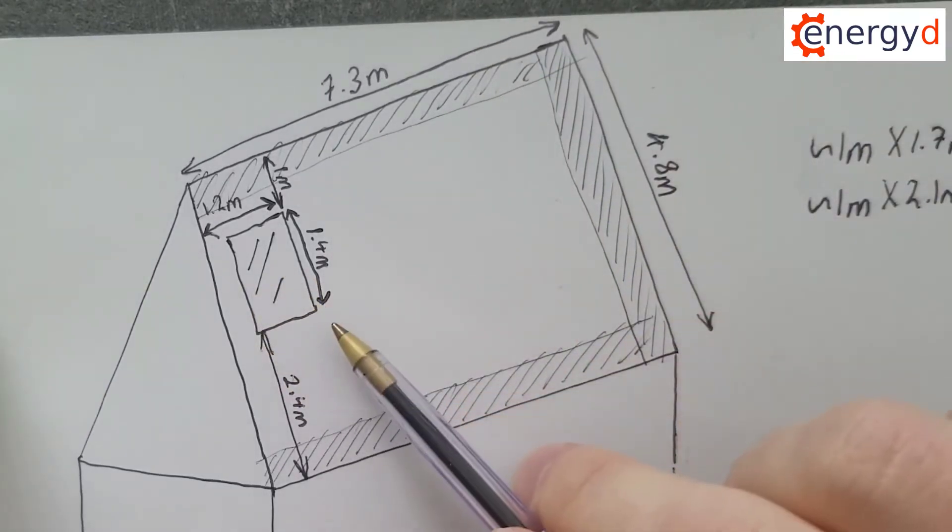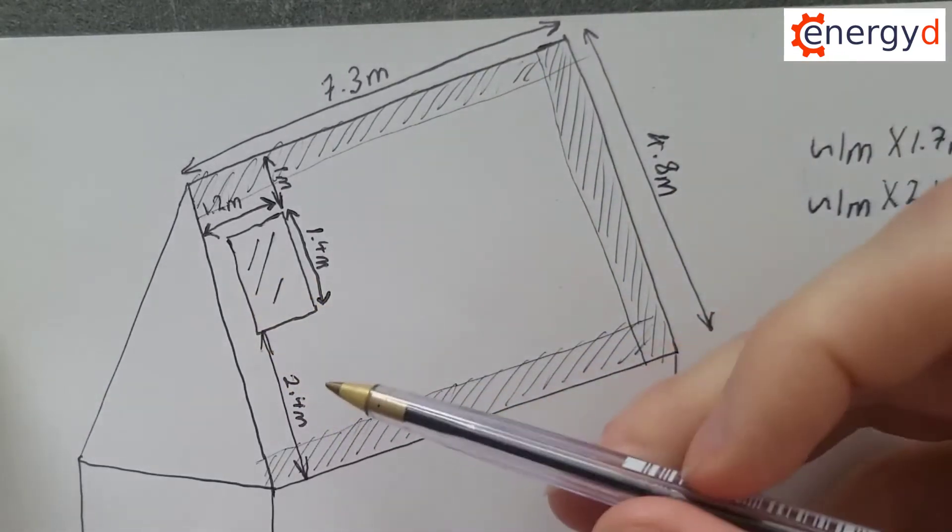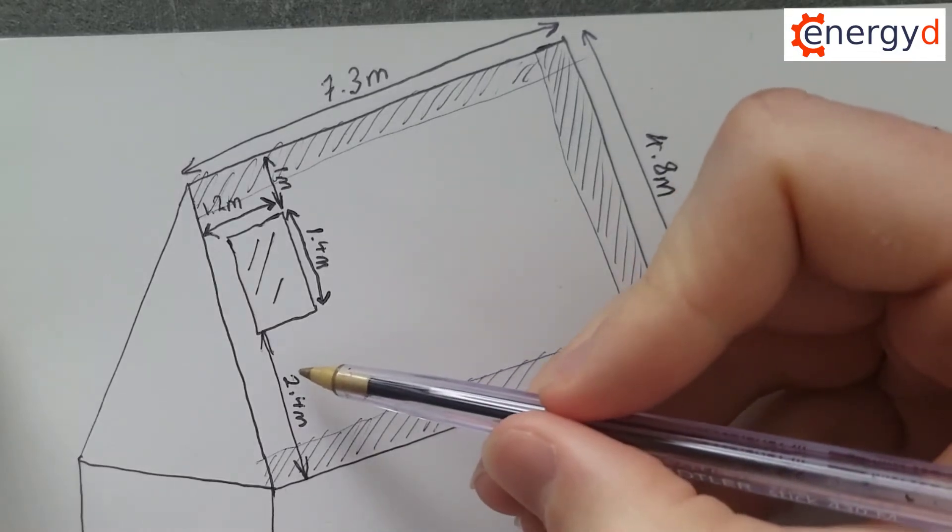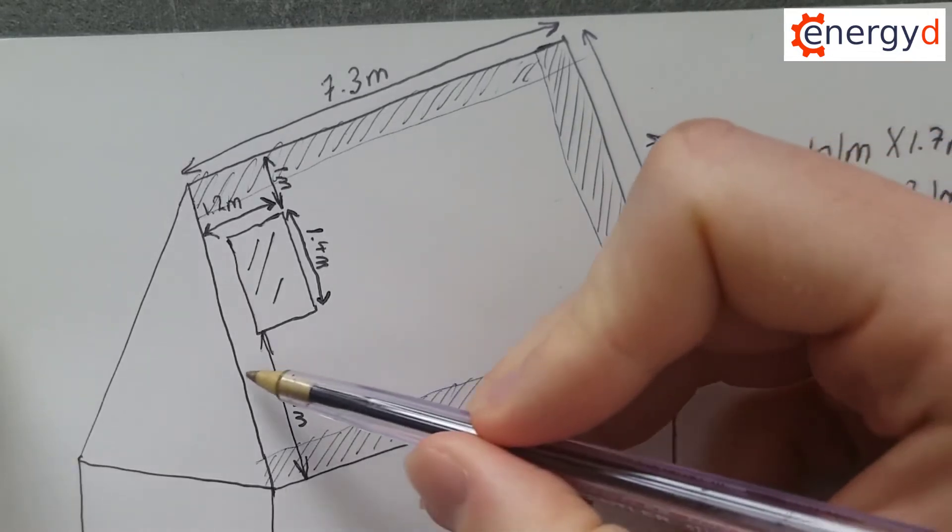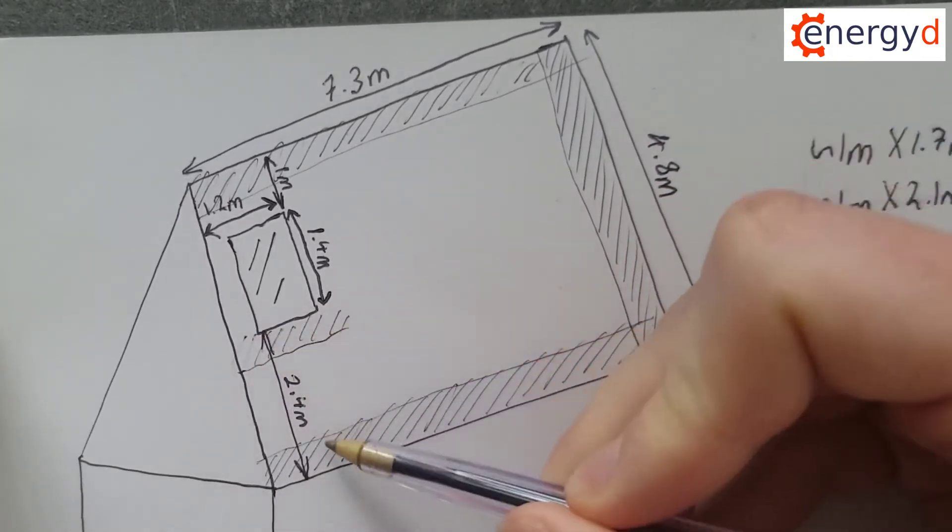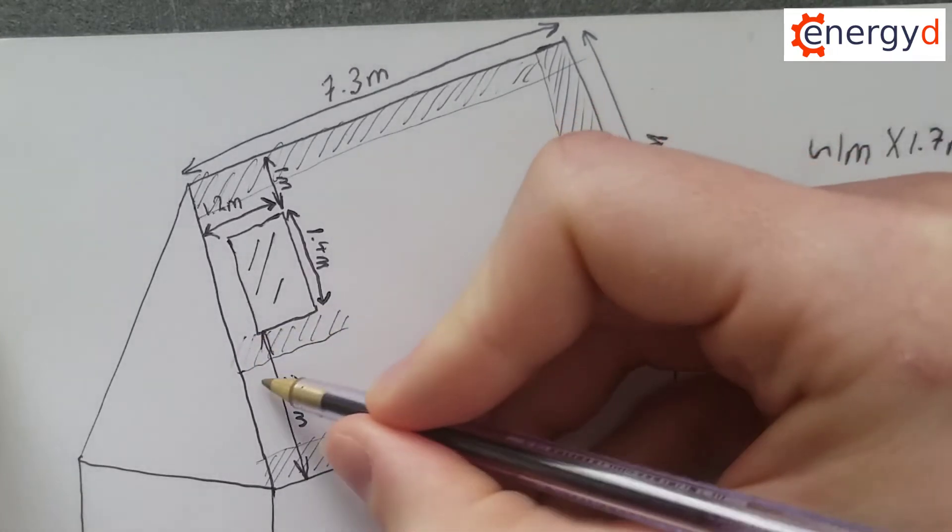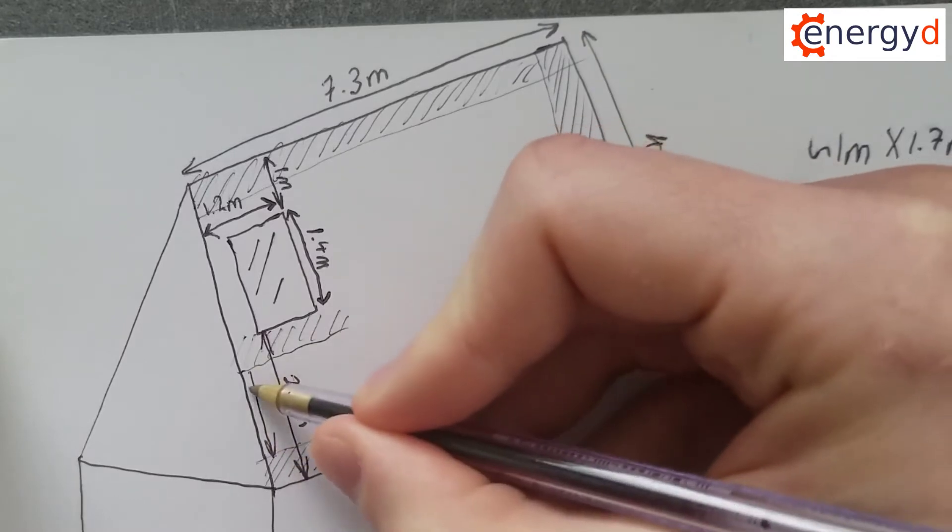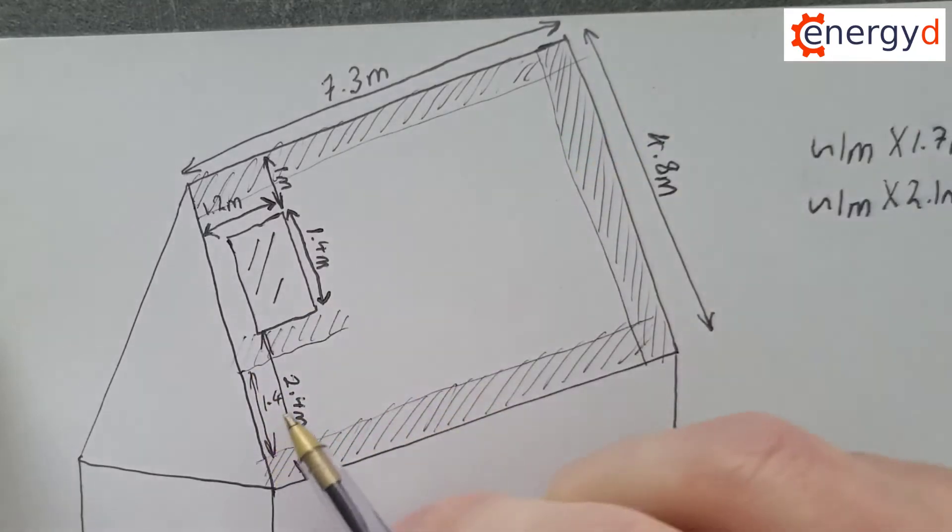And now along the side. Just pausing here for a second, we have 2.4 meters. If we allow 500 underneath this window and 500 here, we've only got 1.4 meters in here. In theory, you could put a panel in landscape. There's not space to put one in portrait.